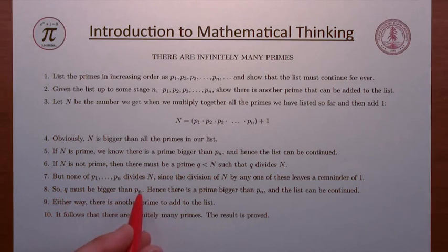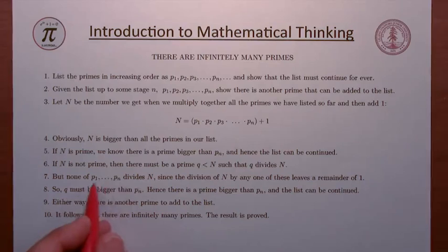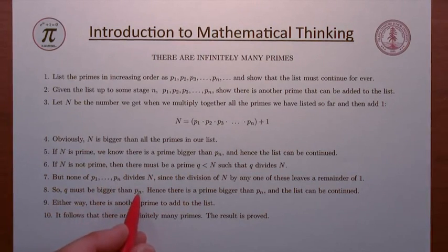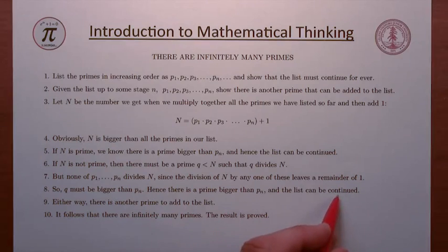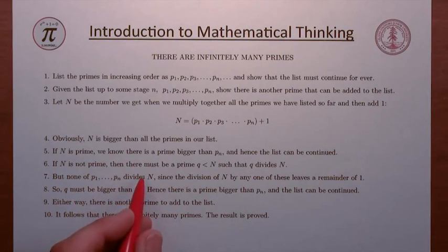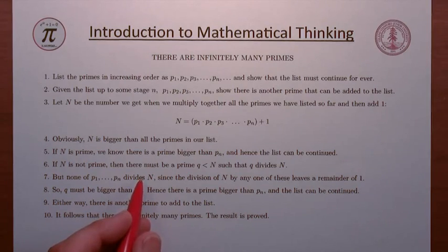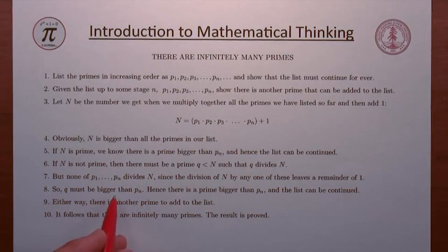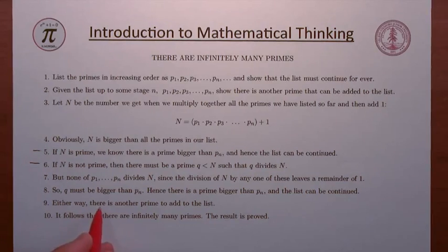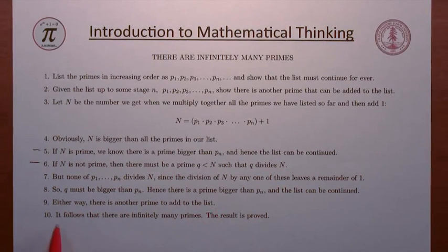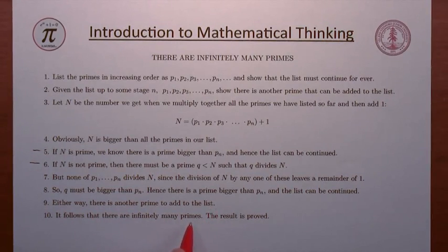So q has to be bigger than p_n. Since p1 through p_n are the first n primes, if q is not equal to one of those, it must be later on in the list. In which case, we've shown again that there's a prime bigger than p_n, and the list can be continued. Either way — whether N is prime or N is not prime — there's another prime to add to the list. It follows that there are infinitely many primes, and the theorem is proved.